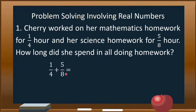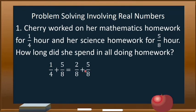We need to get the equivalent fraction of 1/4 with denominator 8, giving us 2/8 plus 5/8. To get 2/8, we divide the LCD by 4: 8 divided by 4 is 2, then multiply by the numerator — 2 times 1 is 2. So we have 2/8 plus 5/8. Since they are now similar fractions, we add: 2 plus 5 equals 7, over the LCD of 8. The answer is 7/8.